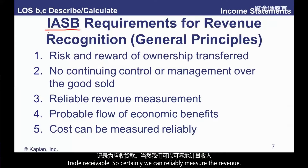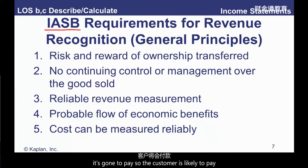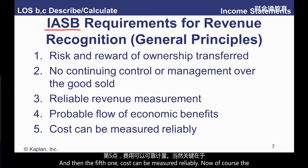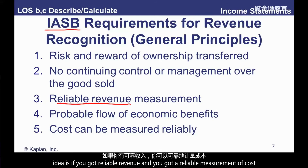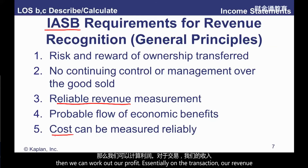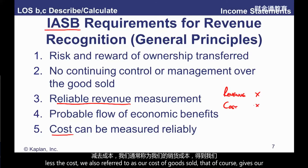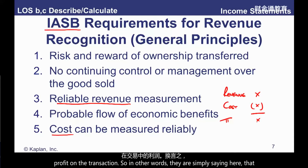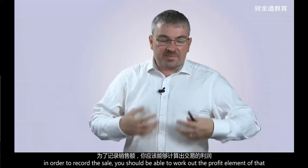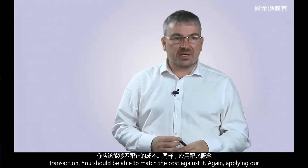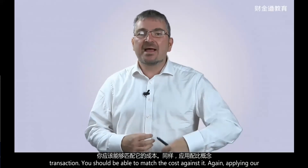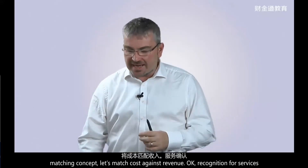We can reliably measure the revenue, it's going to be paid so the customer is likely to pay, and the fifth criterion: costs can be measured reliably. If you've got reliable revenue and reliable measurement of cost, you can work out profit on the transaction — revenue less cost of goods sold. They're really saying you should be able to work out the profit element of that transaction, applying the matching concept to match costs against revenues.